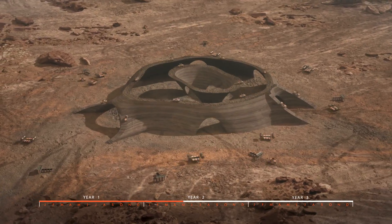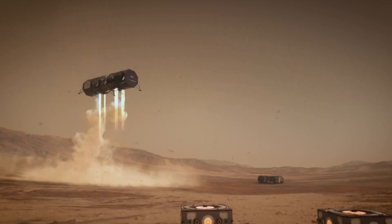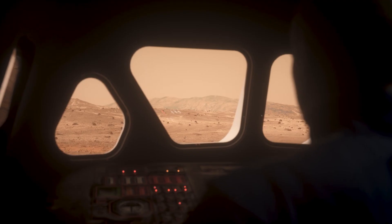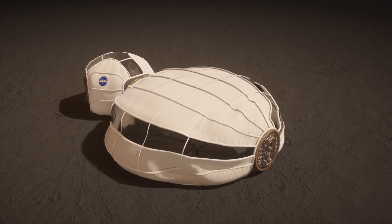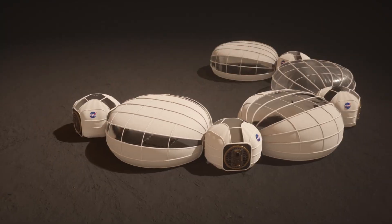The habitat features clever modular inflatable structures protected by Martian soil shields, creating safe living quarters, labs, and greenhouses for food production.